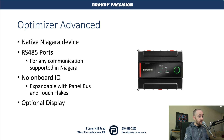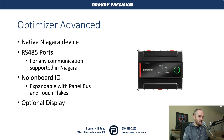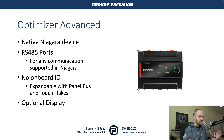Then we get to the Optimizer Advanced, which we've done a bunch of videos on already and will continue to cover. This is a native Niagara device — it runs Niagara directly on it. You can think of it a bit like a JACE, but with a lot of additional features. It has RS-485 ports, no onboard IO, but it is expandable using a panel bus and touch flakes — contacts on the side of the controller so you can pop on expansion IO options directly onto the controller. It also has an optional display. Those 485 ports can be used for anything Niagara supports driver-wise, with licensing where required.